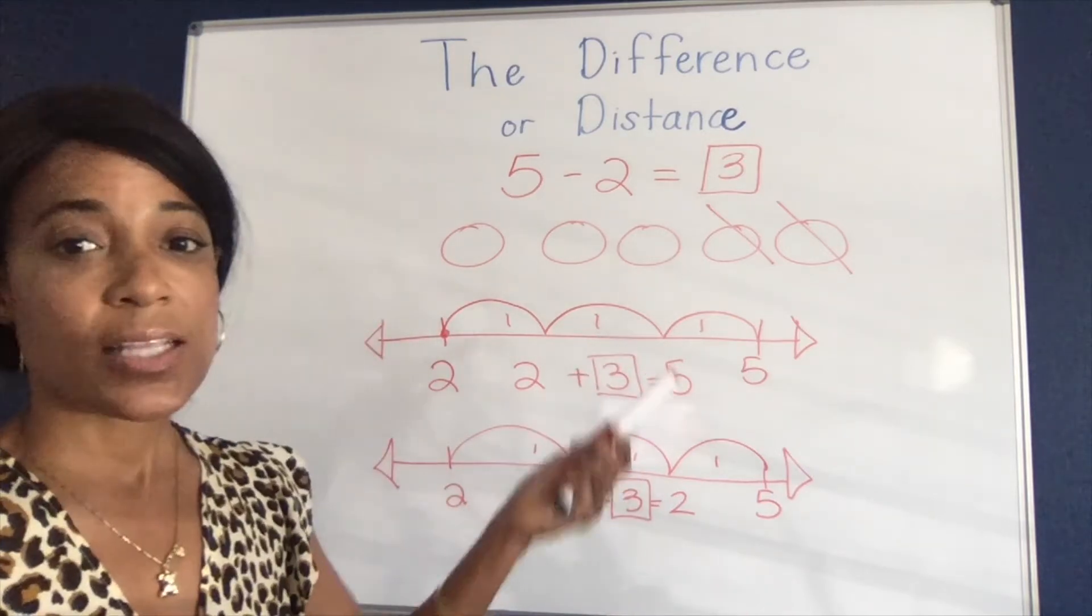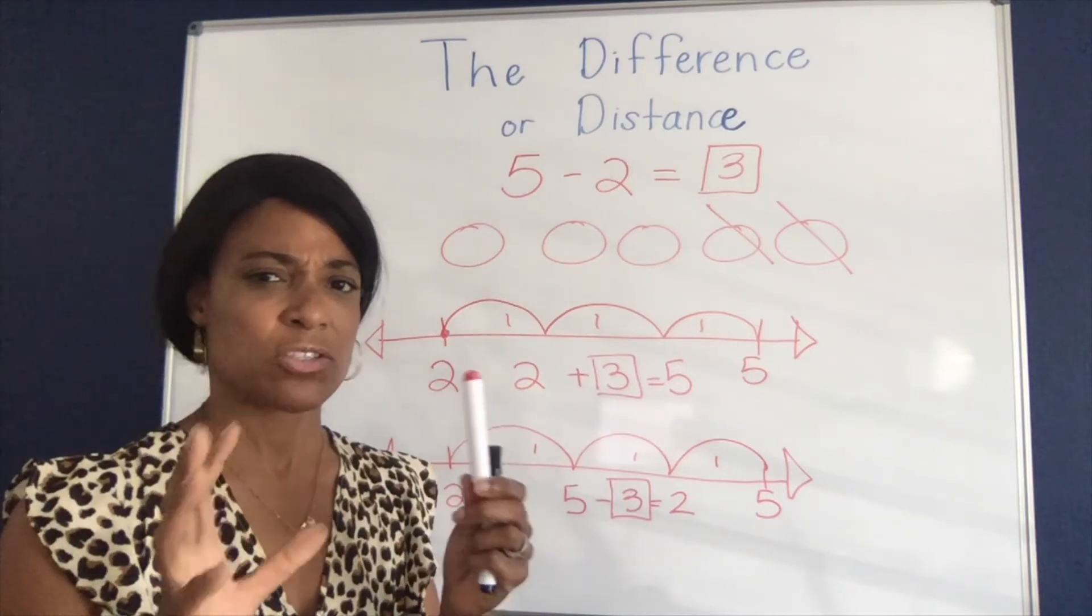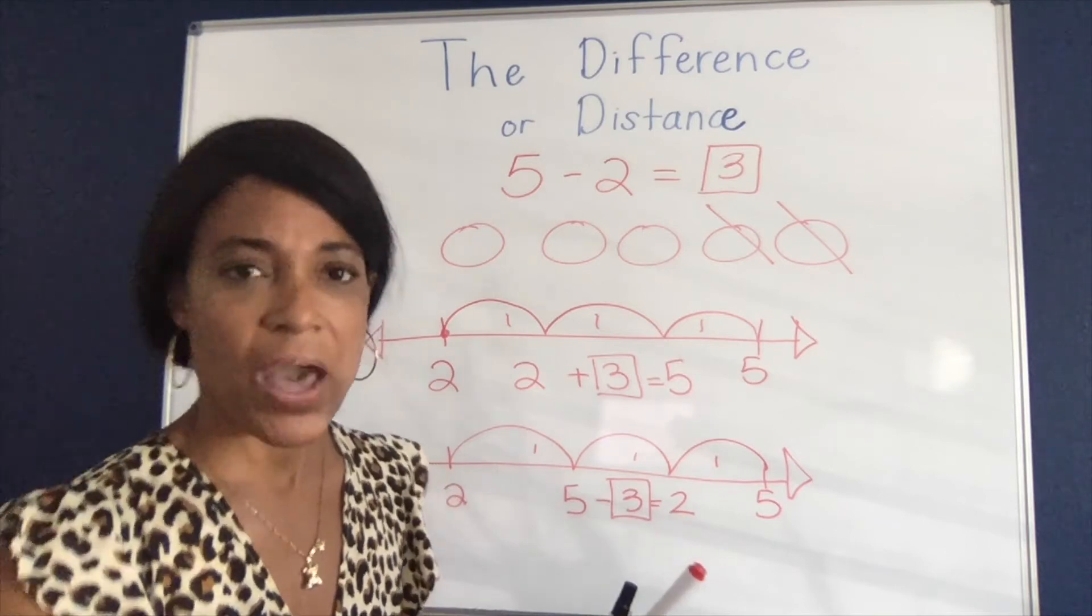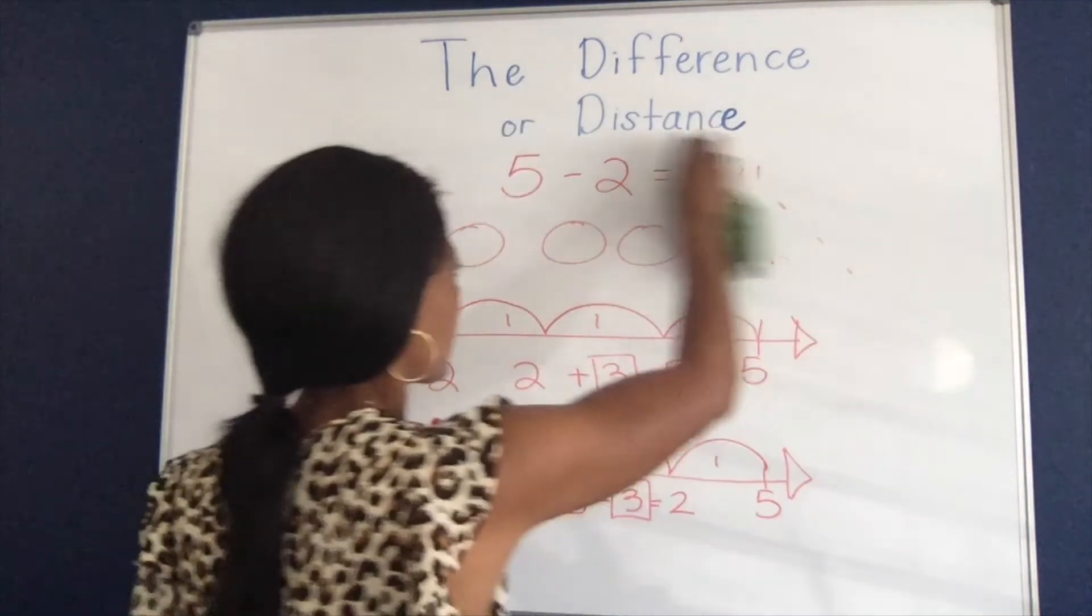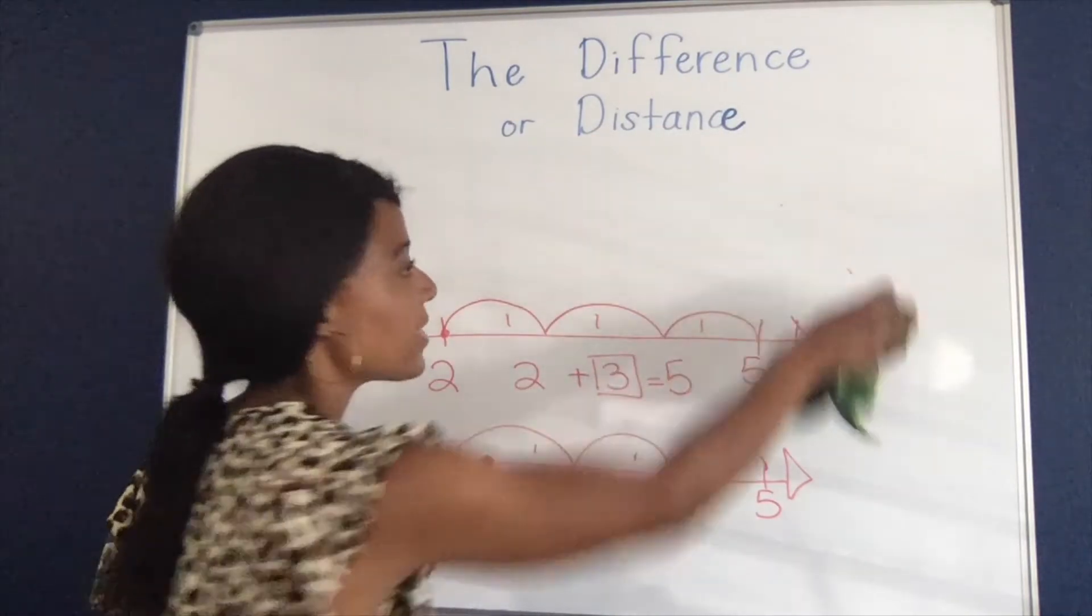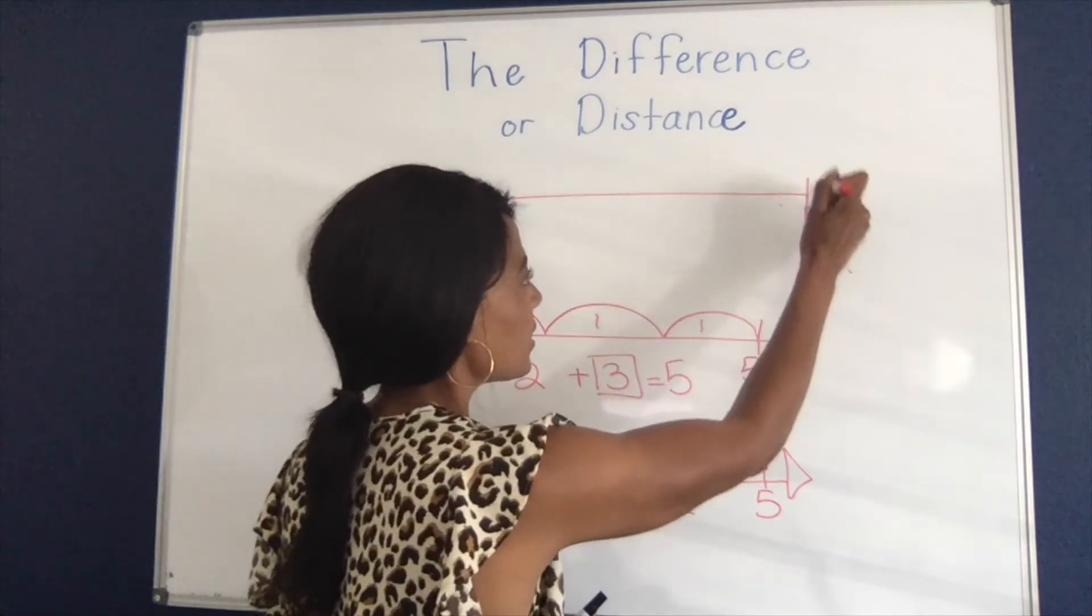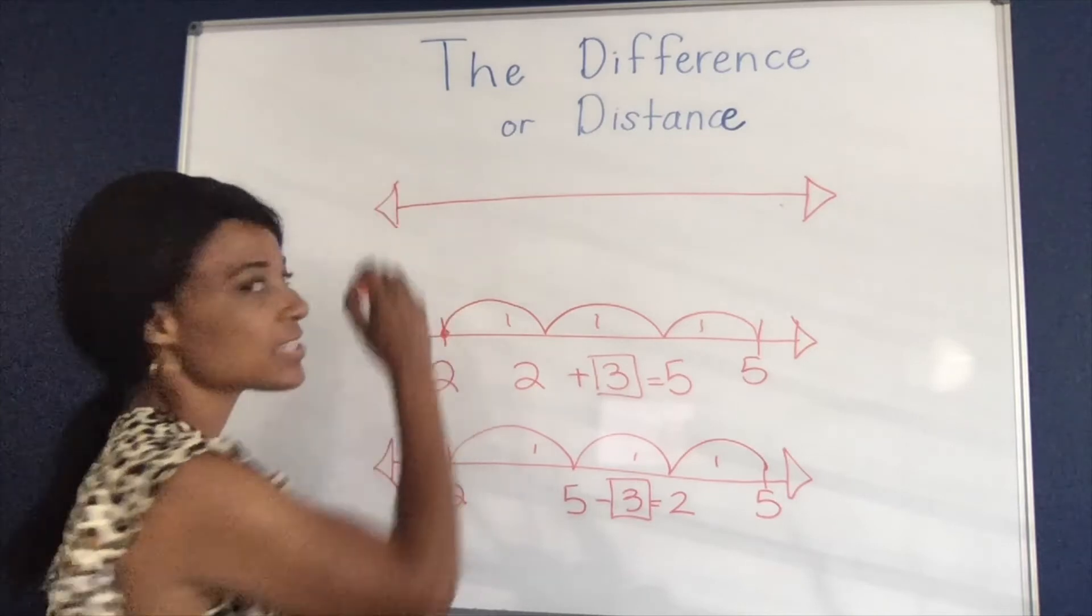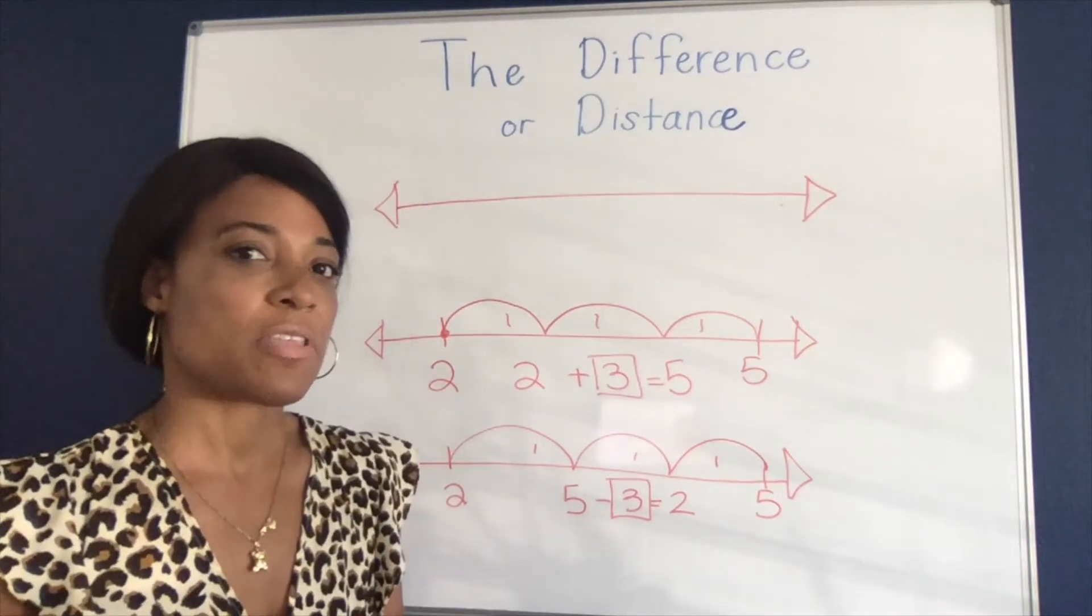Now for some kids this might be a little bit confusing to try and figure out what's this difference or distance between because they're still thinking about it as taking away. So their number lines might look a little differently. And that's perfectly fine. All of these are great tools for the different stages that kids will all go through. Some might be ready sooner than others.